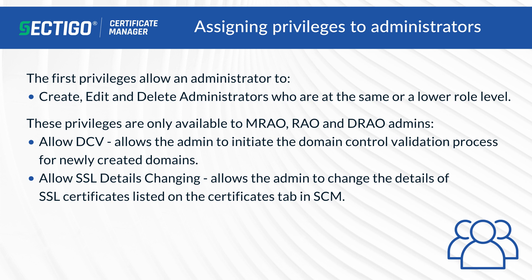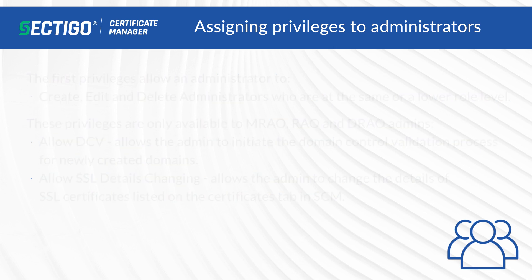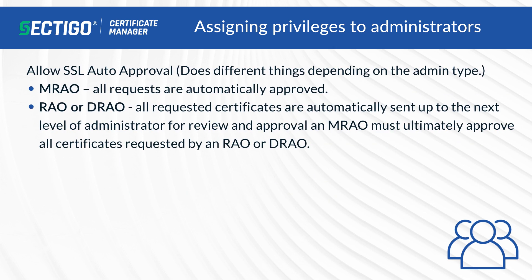The next two privileges are available to MRAO, RAO, and DRAO admins. The Allow DCV privilege allows the admin to initiate the domain control validation process for newly created domains. The Allow SSL Details Changing rule allows the admin to change the details of SSL certificates listed on the certificates tab in SCM. Allow SSL Auto Approval means different things depending on the admin type: for an MRAO, all requested certificates are automatically approved; for an RAO or DRAO, all requested certificates are automatically sent to the next level of administrator for review. An MRAO must ultimately approve all certificates requested by an RAO or DRAO.